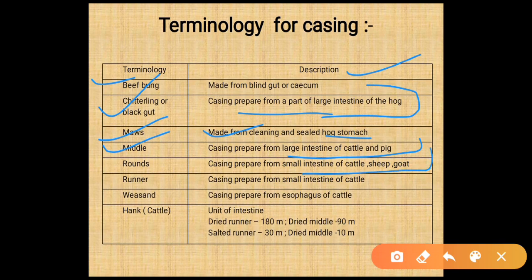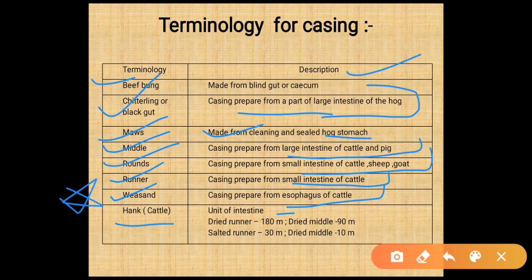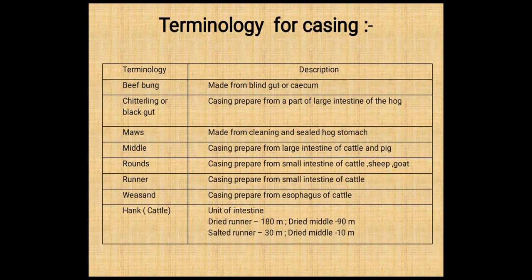Casings prepared from the small intestine of cattle, sheep, and goat are known as rounds. Casings from the small intestine of cattle are known as runner. Casings prepared from the esophagus are known as weasand. A hank is a unit of intestine: dried runner equals 180 meters, dried middle is 90 meters, salted runner is 30 meters, and dried middle is 100 meters.